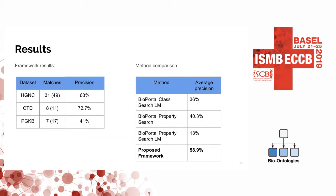You can see that our framework already has great results on the three datasets — over 40% of all dataset columns actually had matches found in properties from BioPortal. In comparison with using just BioPortal search options such as class search, longest match, property search, and property search exact match, our framework performs the best with almost 60% accuracy.